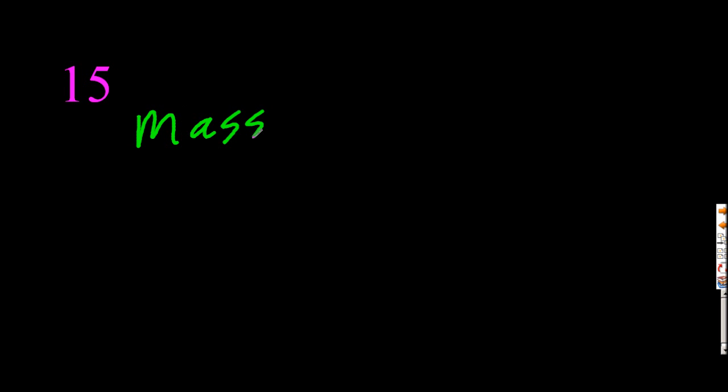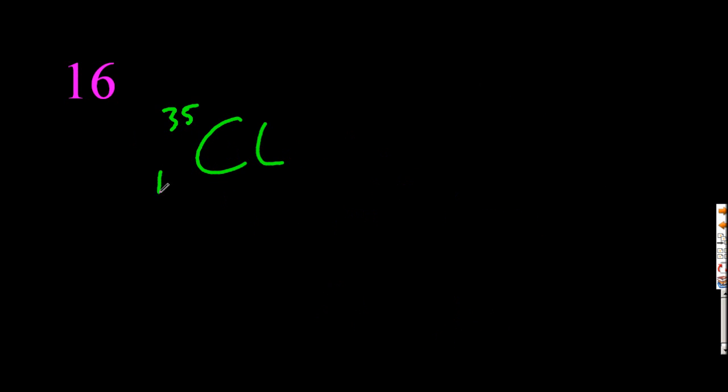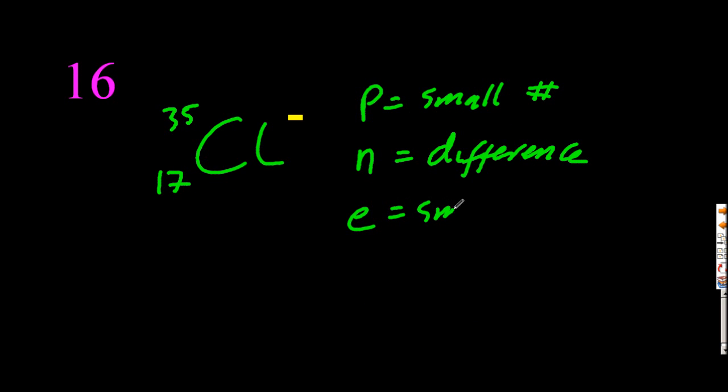Number 15. The mass of an electron is not minus one. Nothing has negative mass. The charge is negative one, but not the mass. Don't fall for this little trick here.